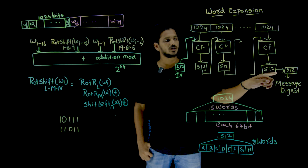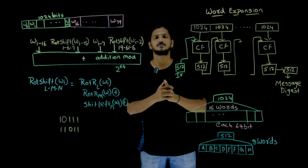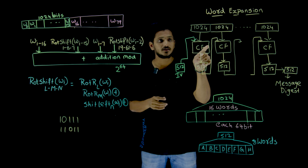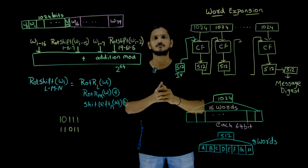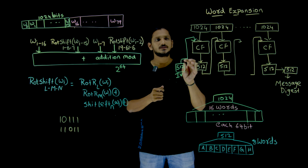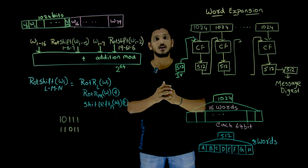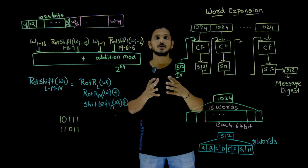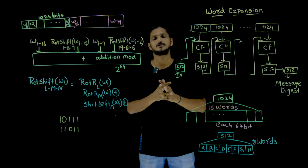This is an iterative method, and the last 512 bits we call the message digest. Now, what happens inside this compression function? This 1024 bits is taken and in SHA-512, the compression function works in the form of words.